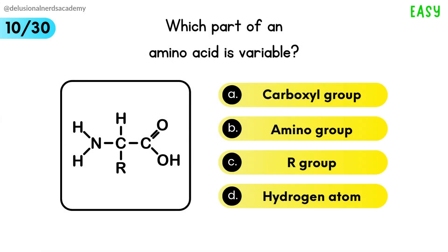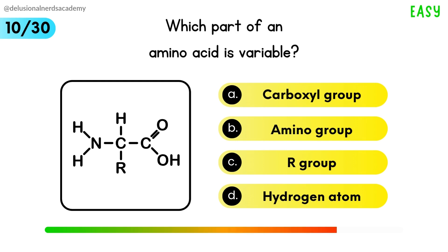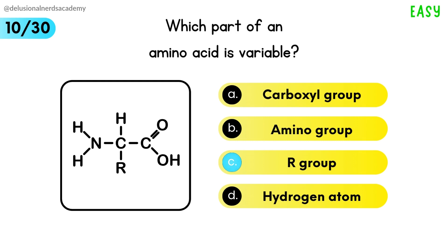Which part of an amino acid is variable? The R group in the amino acid is variable.